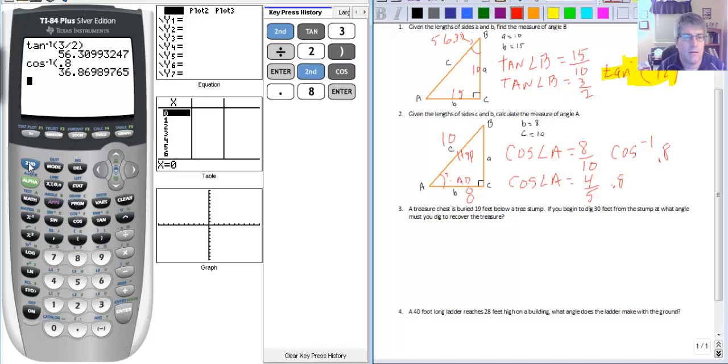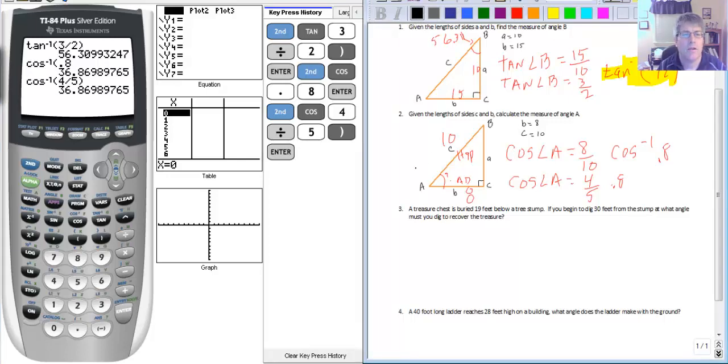And for kicks we'll use our fraction. Second cosine 4 divided by 5. And how about that? We get the exact same thing both times 36.87 degrees for the measure of angle A.